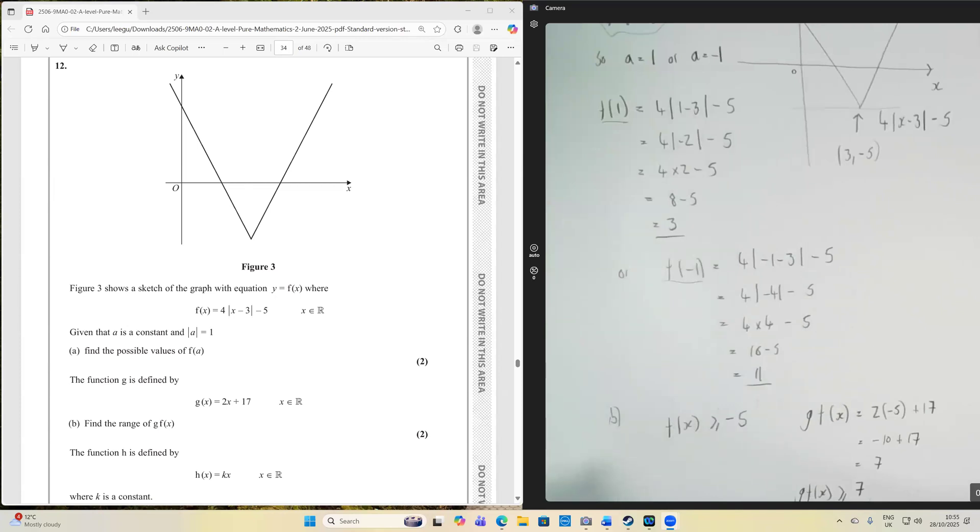Part b, find the range of g of f of x, given that g of x is equal to 2x add 17, where x is a member of the set of all real numbers.